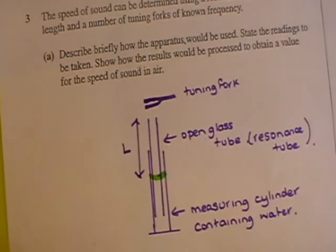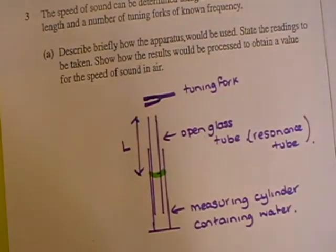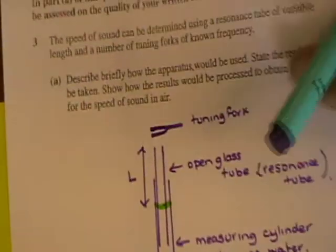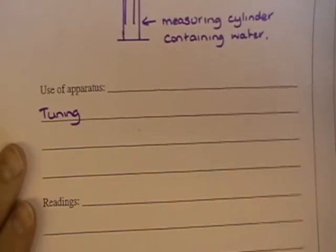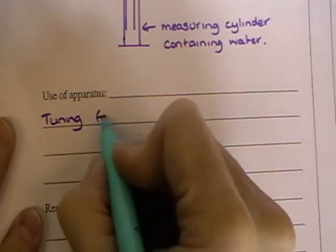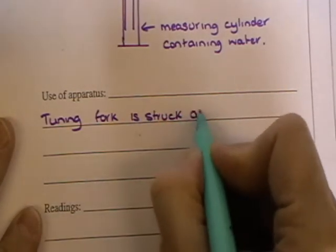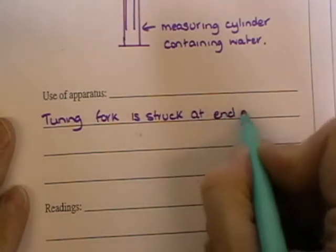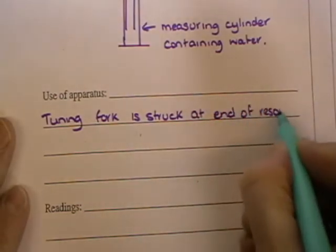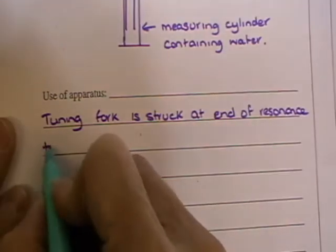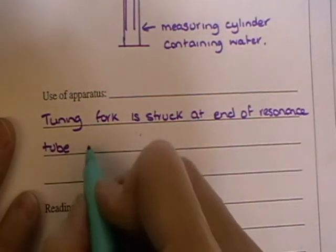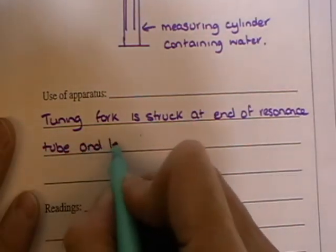So use of the apparatus. Tuning fork is struck at the end of the resonance tube. And length of the resonance tube adjusted.